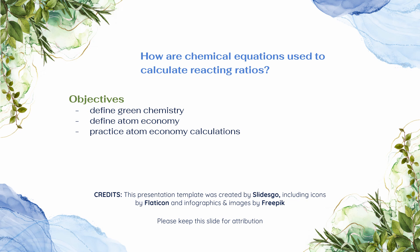And we have already accomplished our objectives! We defined green chemistry as considering all aspects of a reaction and their impacts on the environment. We defined atom economy, looked at how to find the equation in our data booklet, and then did some calculations. Great work today, friends.